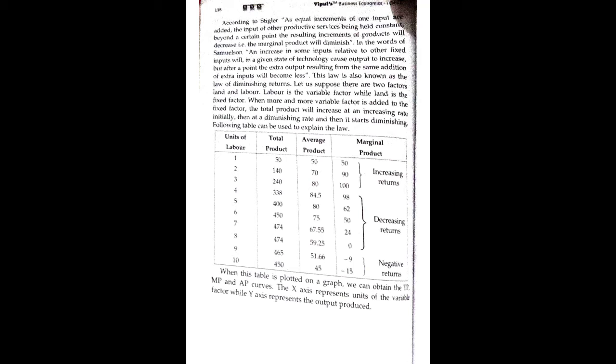The average product is calculated as total product divided by input. So: 50 divided by 1 equals 50; 140 divided by 2 equals 70; 240 divided by 3 equals 80; 338 divided by 4 equals 84.5.